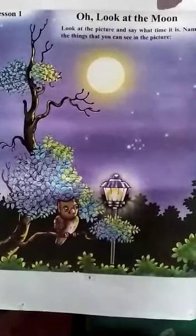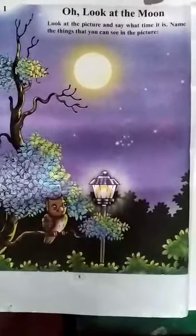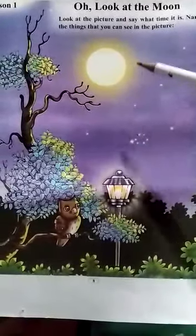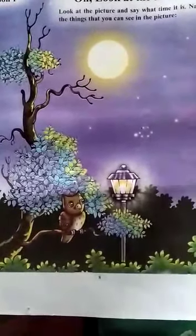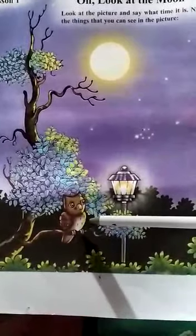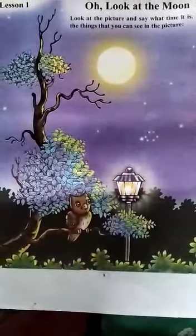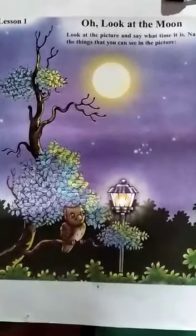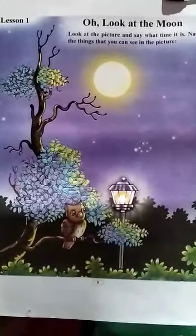Look at this picture and say what time it is. What do you see? A moon. Stars. A lamp. An owl sitting in a tree. From here we can say that this is a picture of night time. Right?